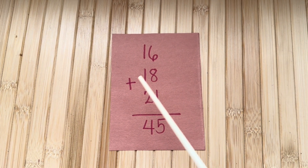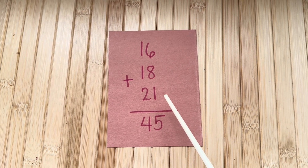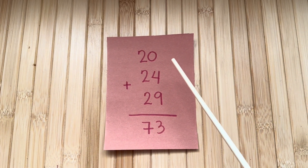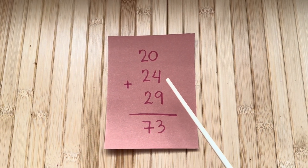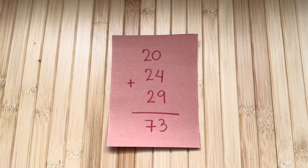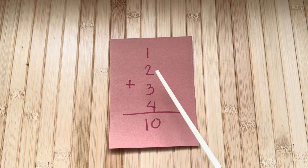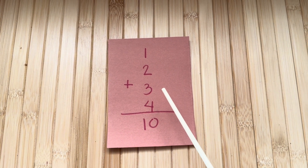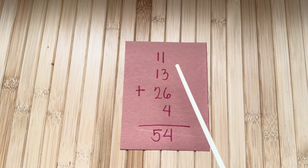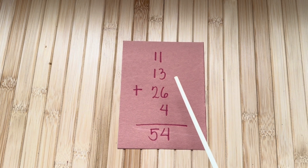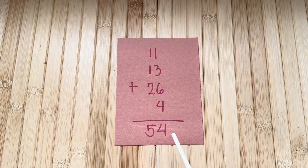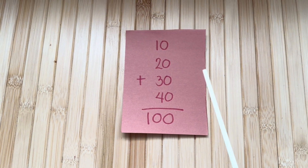16 plus 18 plus 21 is equals to 45. 20 plus 24 plus 29 is equals to 73. 1 plus 2 plus 3 plus 4 is equals to 10. 11 plus 13 plus 26 plus 4 is equals to 54. And lastly,